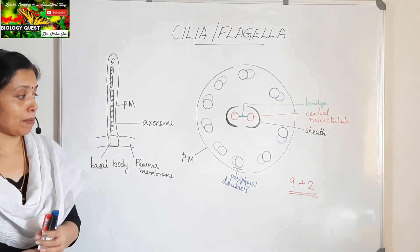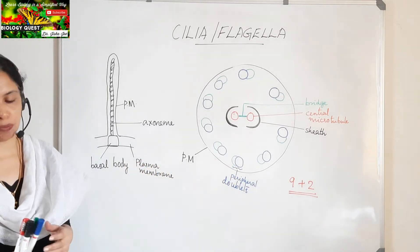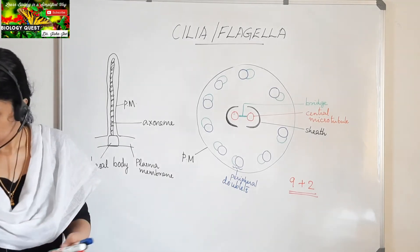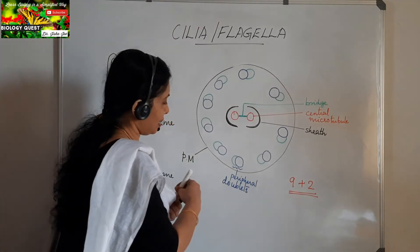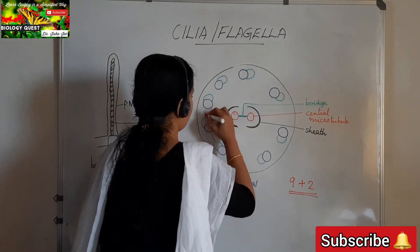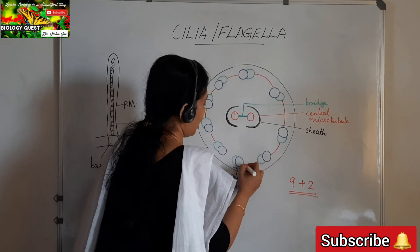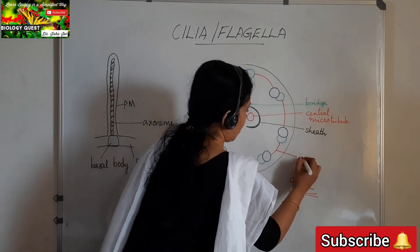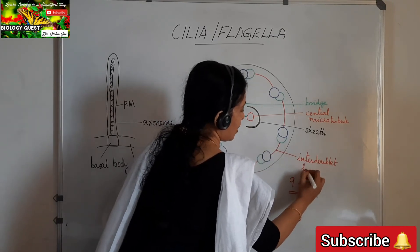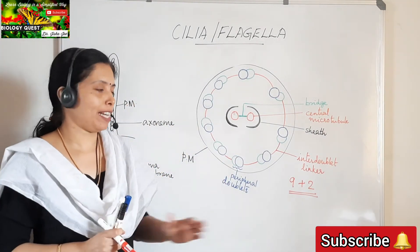Looking at the peripheral microtubules, they are formed of two sub-fibers marked as A and B. Sub-fiber A is the complete one and sub-fiber B is the incomplete one. The peripheral doublets are interconnected with each other by means of an interdoublet linker, which connects two adjacent peripheral doublets.